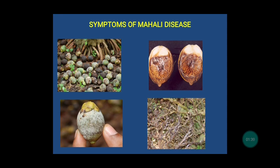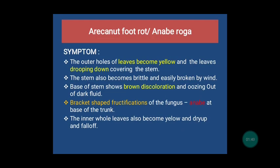Here the picture shows the symptoms of Mahali disease. The first picture shows shedding of immature nuts, the second one shows dark brown radial strands, the third one shows white mycelial growth, and the last one shows the withering of leaves.